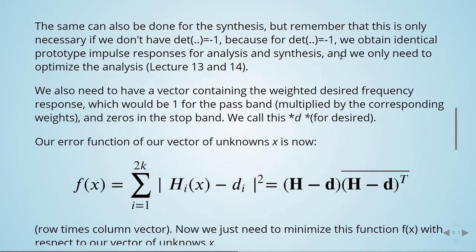We also need a vector containing the weighted desired frequency response, which would be 1 for the pass band (multiplied by the corresponding weights) and zeros in the stop band. We call this d for desired.